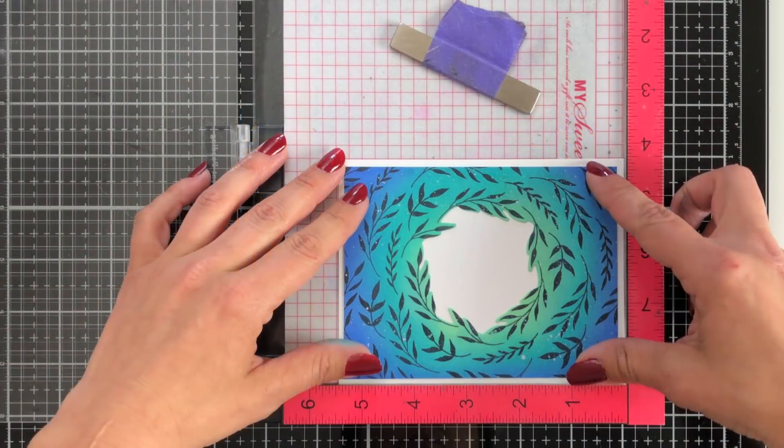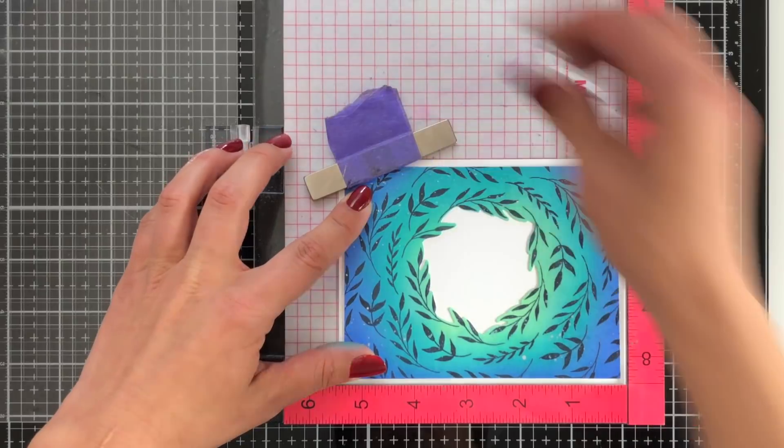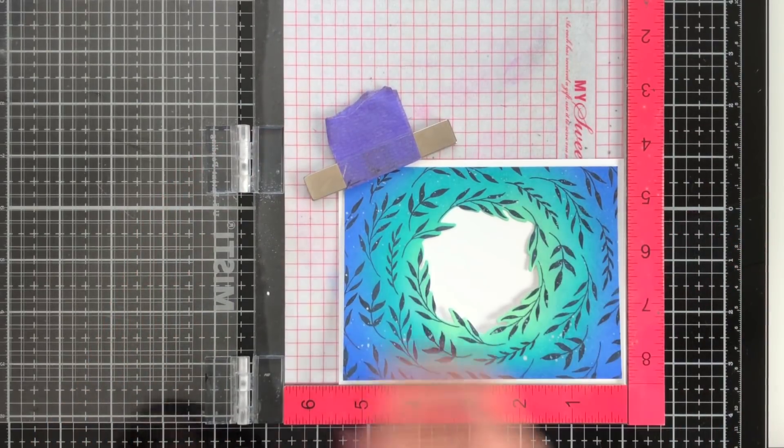I'll hold that in place with the purple tape. And now I have a die cut center out of my card. I just had run that through my die cutting machine.